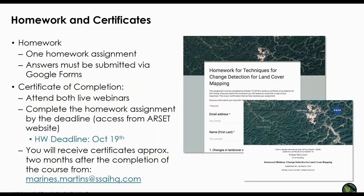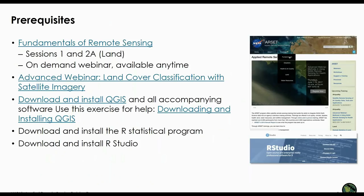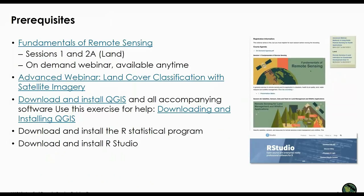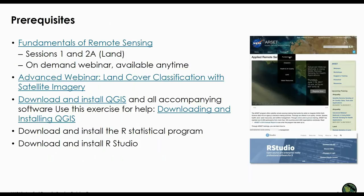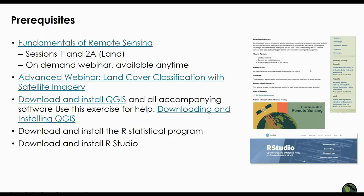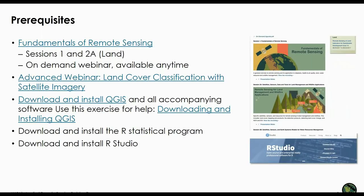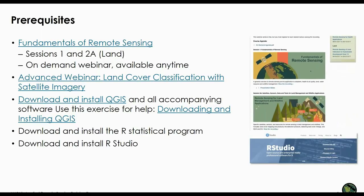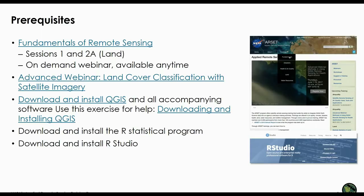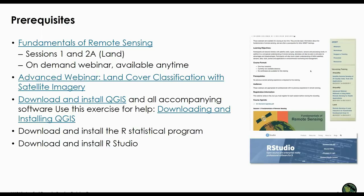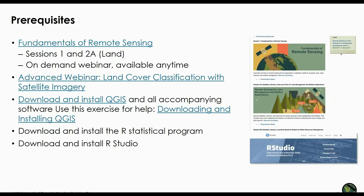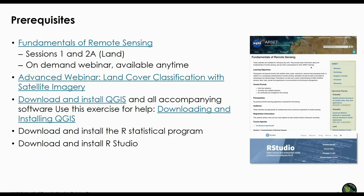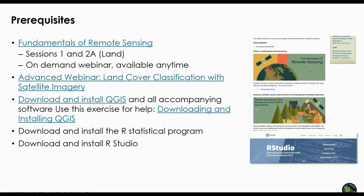You will receive your certificate about two months after the completion of the course from Marina Martins listed here. We have a few prerequisites for this course because it's an advanced course. The first is to make sure that you have viewed our Fundamentals of Remote Sensing webinar series, which you can view any time from our website, or at least have taken a remote sensing class. We also require that you've taken the advanced webinar on land cover classification with satellite imagery, because we will be doing a land cover classification during the second webinar.